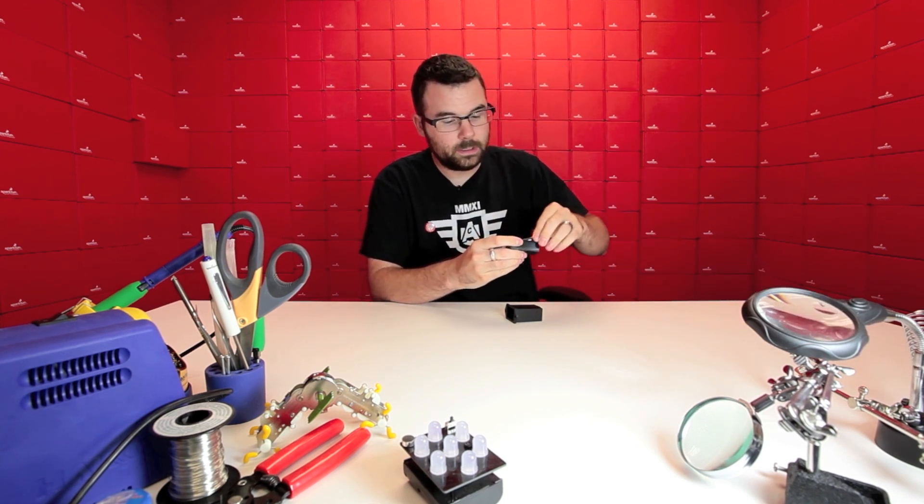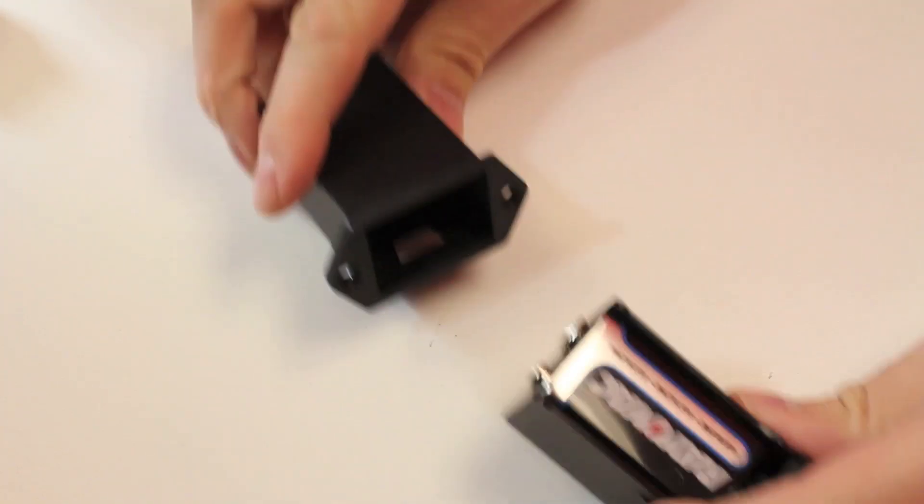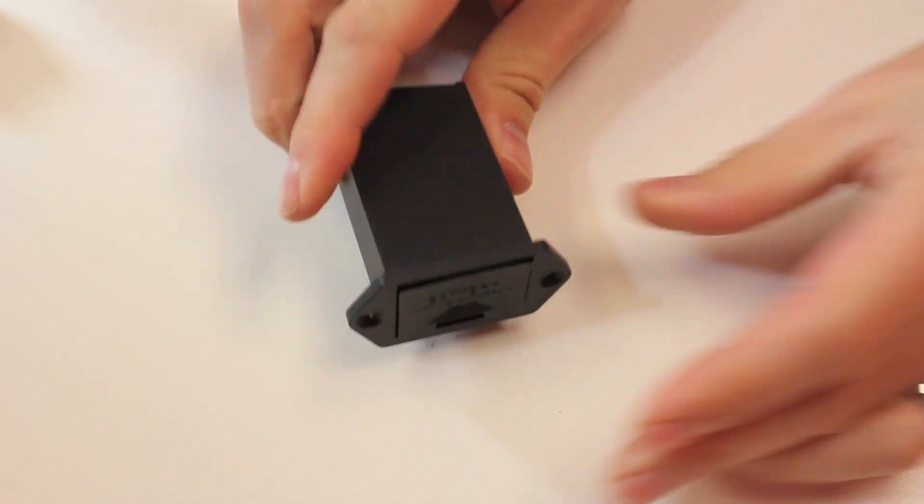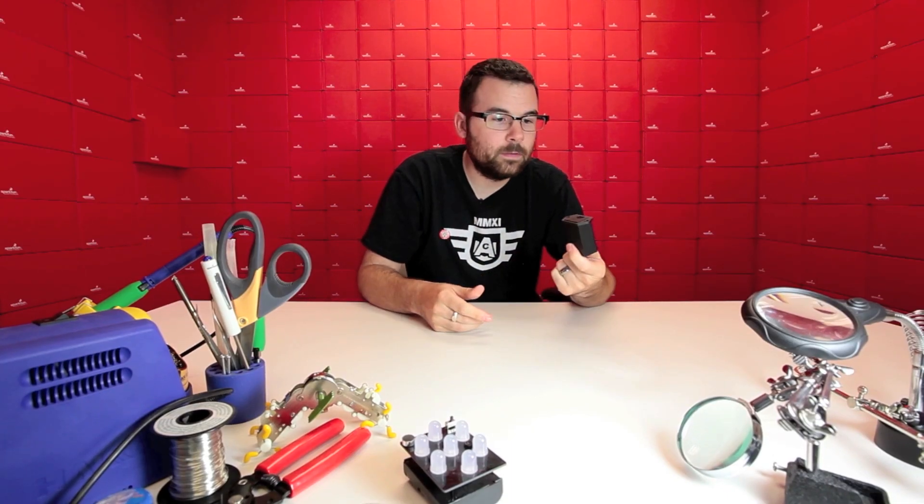And have a little tray which holds a 9-volt battery. So all we have to do is just put it inside like that and then slide it inside. Snaps in. And now we have a nice panel mount 9-volt battery holder.